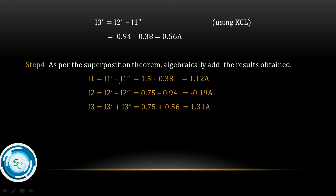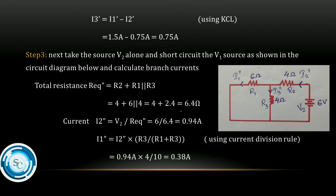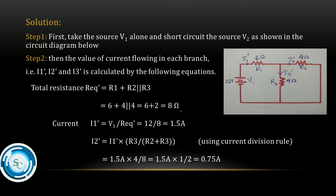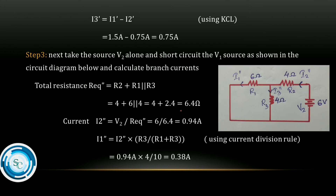Now we add the results. We add I1' and I1'' and we add I2' and I2''. We must consider the current flow direction — if the directions are the same, we add the magnitudes; if opposite, we subtract. The direction of the magnitude determines the final answer.